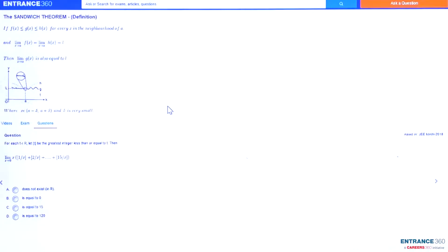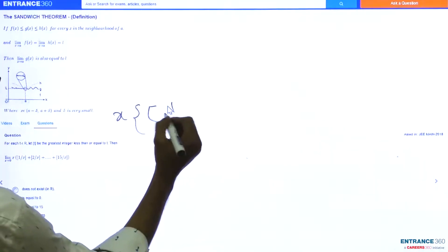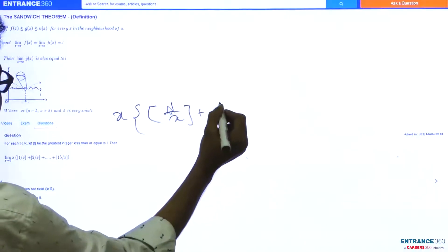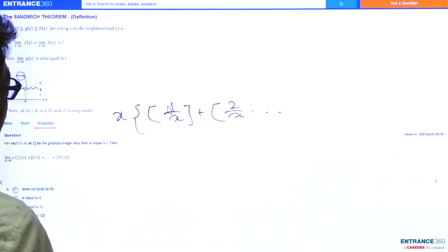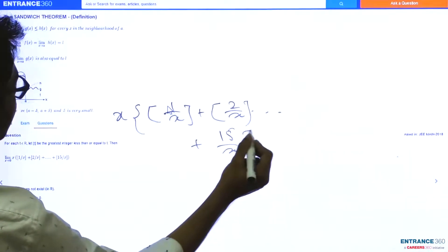We need to find the limit as x tends to 0 of x into the sum of the fractional parts: 1/x plus 2/x up to 15/x.